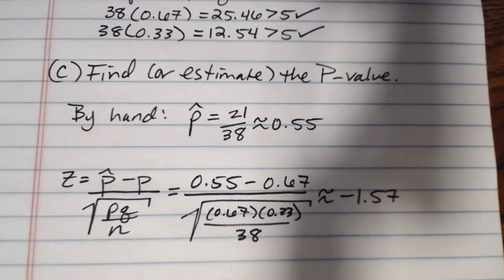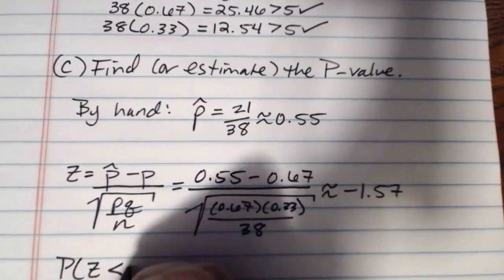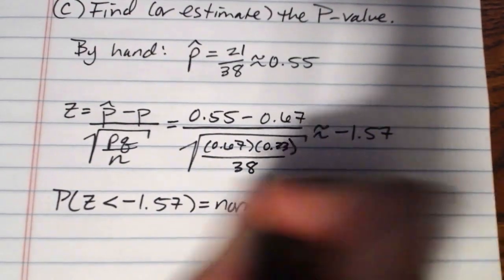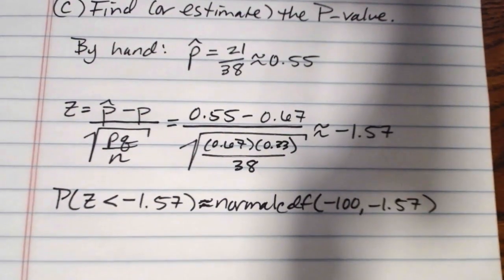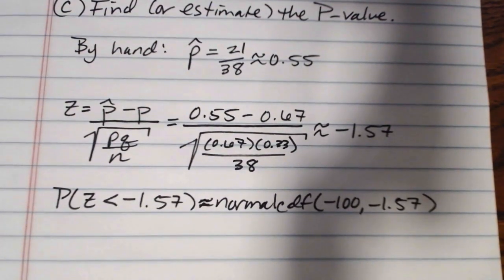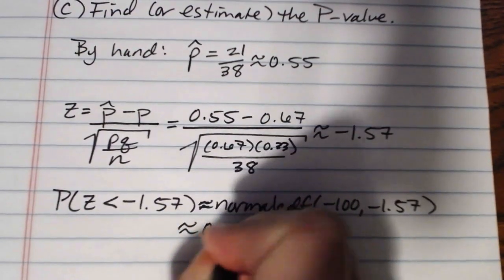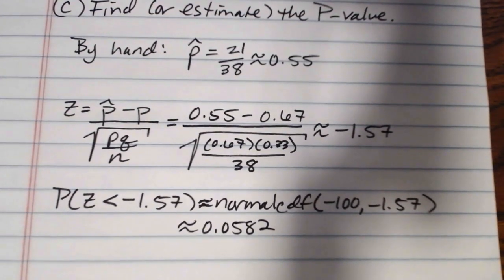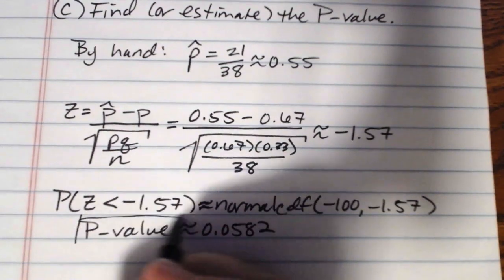Since we were testing to see what's the probability of being less than that, we'd be looking for the probability that Z is less than negative 1.57. We would put that into normal CDF, negative 100, negative 1.57. And when we crunch that through, we get about 0.0582. So there's our P value, capital P value.